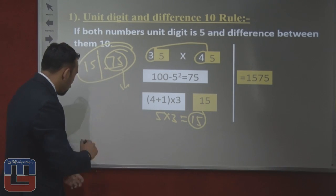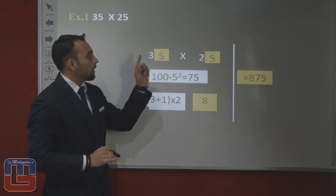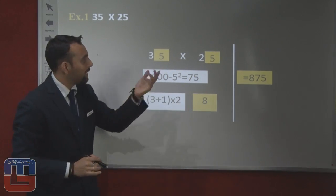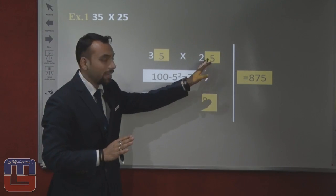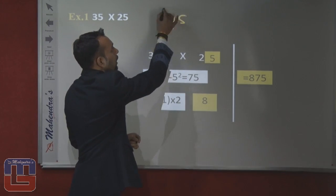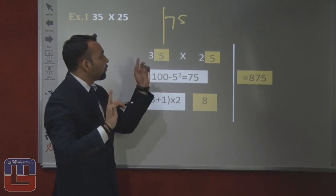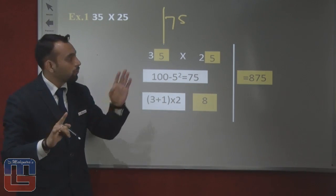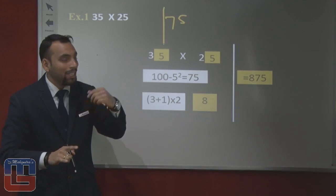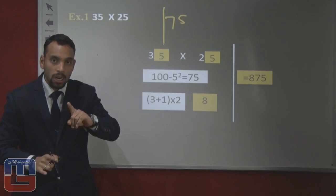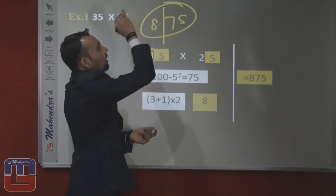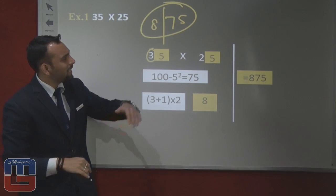Let us take one more example: 35 into 25. The unit digit is 5 and the difference between the two numbers is 10, so 75 will always come. Now 3 and 2 — which one is bigger? 3. So we add 1 to 3, giving 4. Multiply 4 by 2 to get 8. So the answer will be 875.